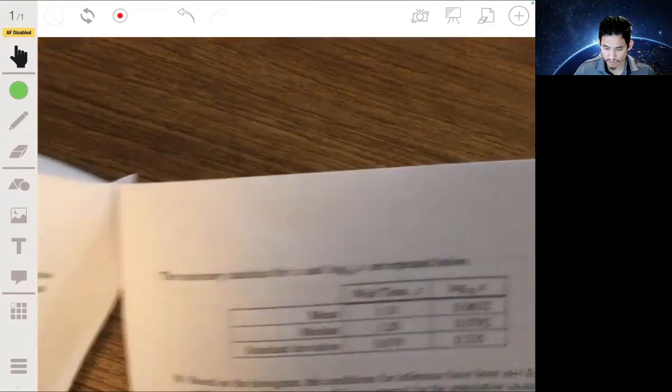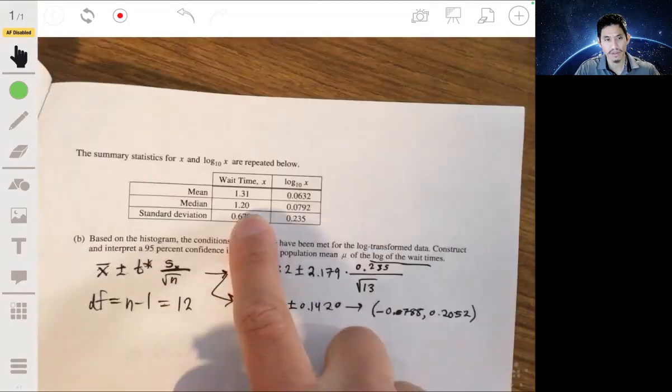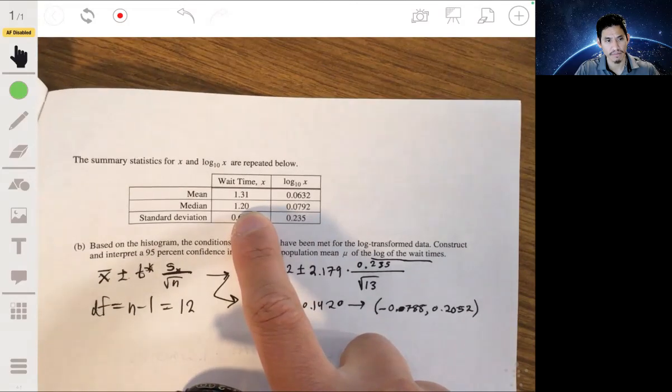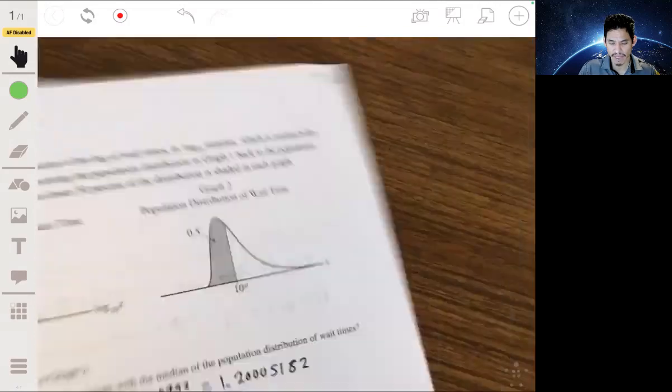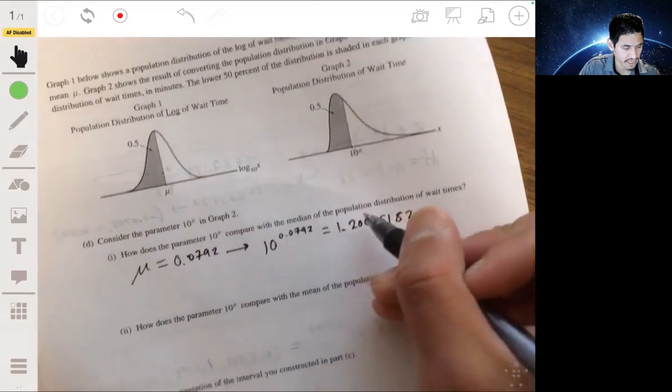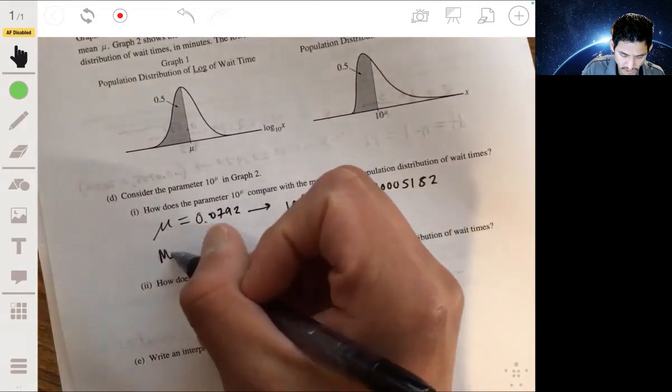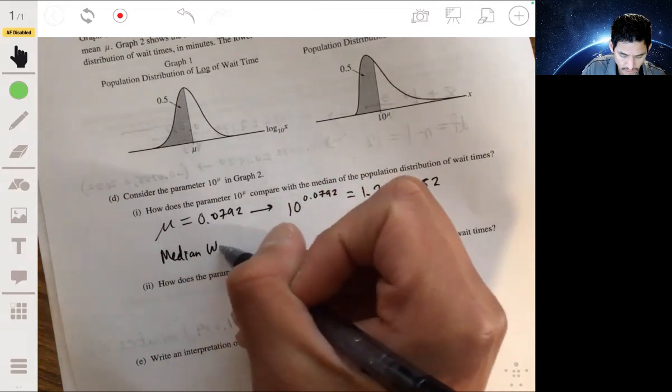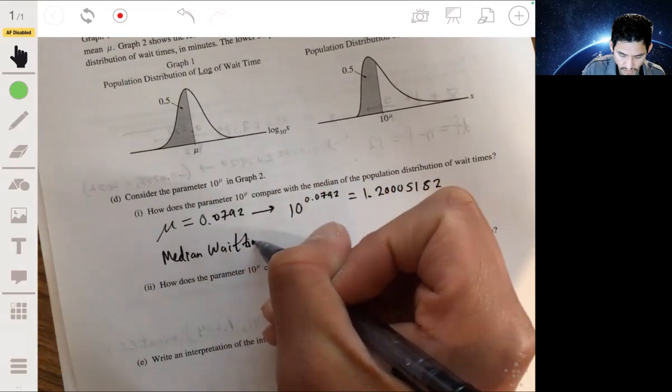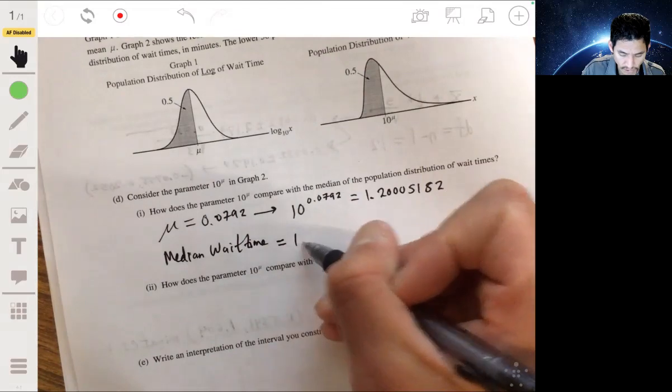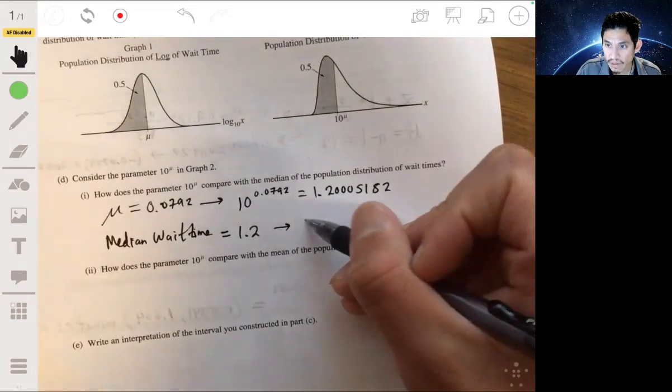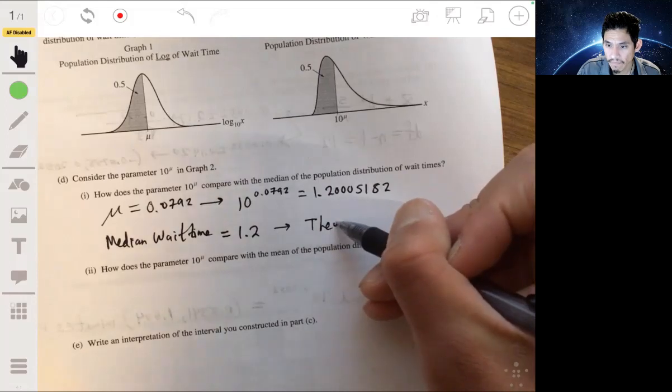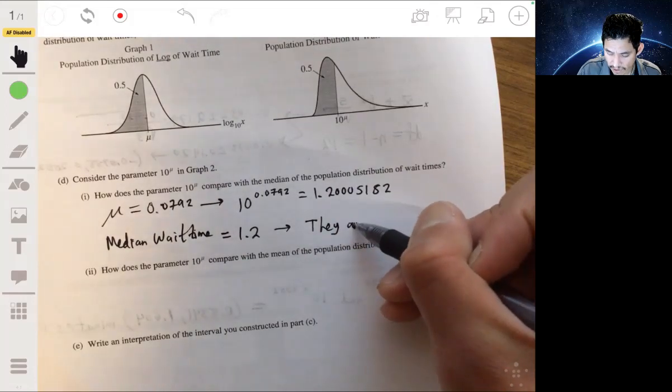Going back, if you look, the median is the same. The median is 1.20. So that's what I mean by mathematically, that they're the same. The median wait time is equal to 1.2 minutes. So they are equal.